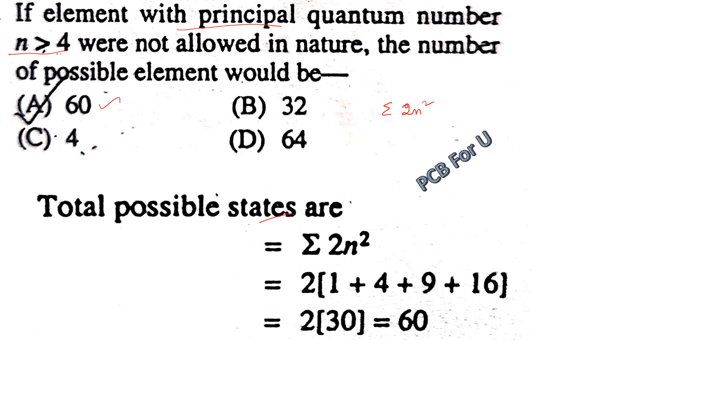So 1 squared plus 2 squared plus 3 squared plus 4 squared, because n is greater than 4. So 1 plus 4 plus 9 plus 16 equals 30, so 2 into 30 is 60.